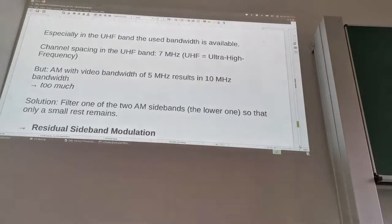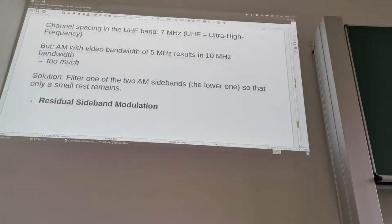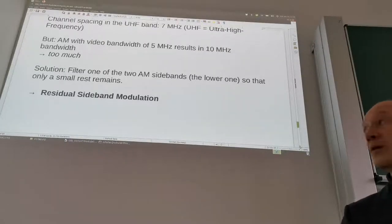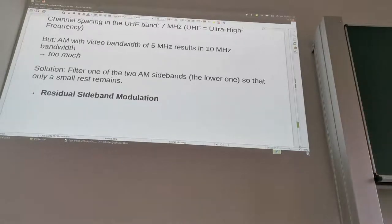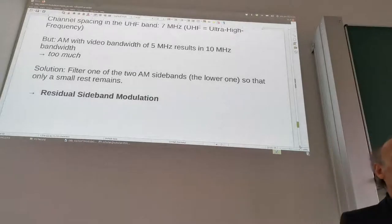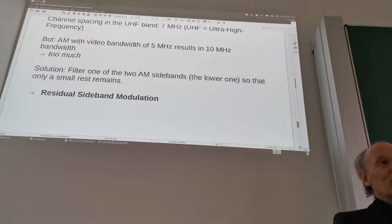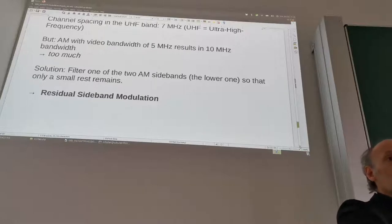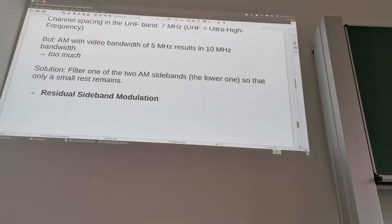Even in the UHF band, the 10 MHz from our video signal is too much. So the solution is to filter and suppress one of the AM sidebands. Basically we start with AM modulation — we take the camera signal, modulate the carrier, we get 10 MHz bandwidth — but then we filter and suppress one of the sidebands. The upper sideband is unsuppressed, but the lower sideband is now suppressed.